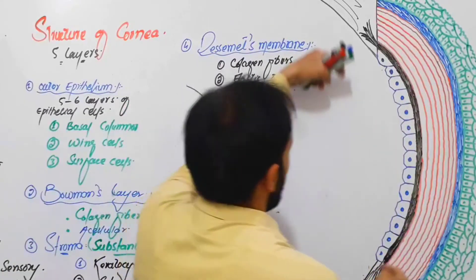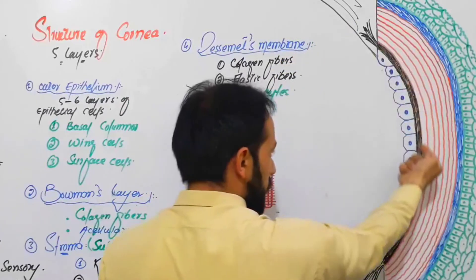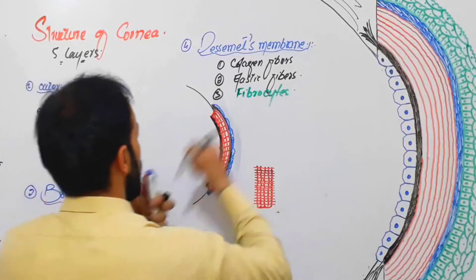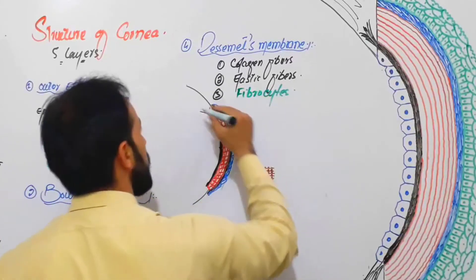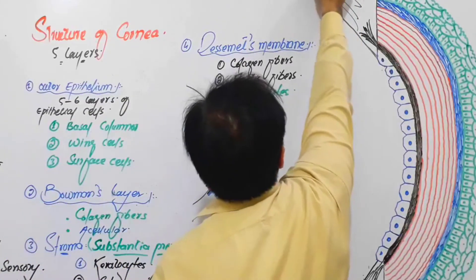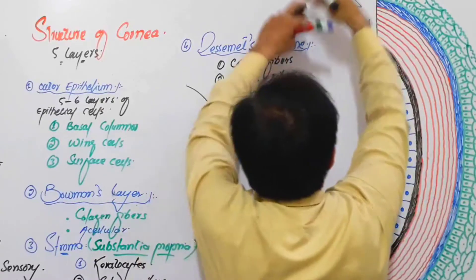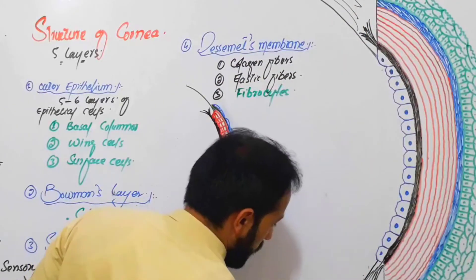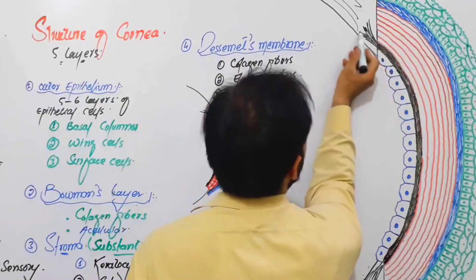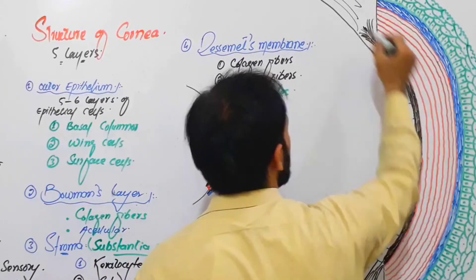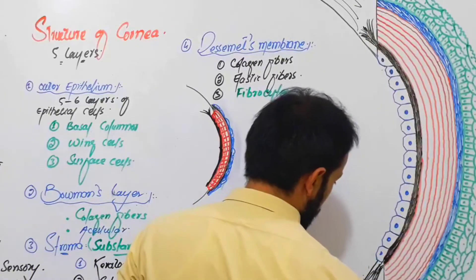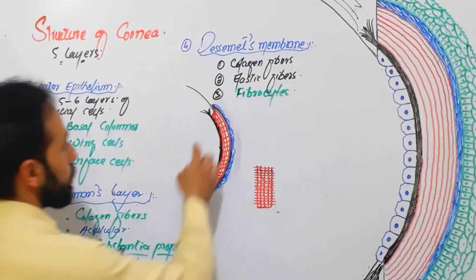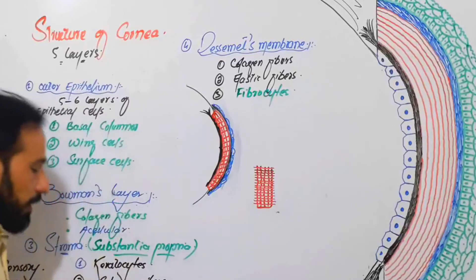Descemet's membrane — the fourth layer, shown as the black layer in this diagram — gives some fibers which enter the sclera. So this membrane gives fibers that enter the sclera, making an attachment between the sclera and the cornea.